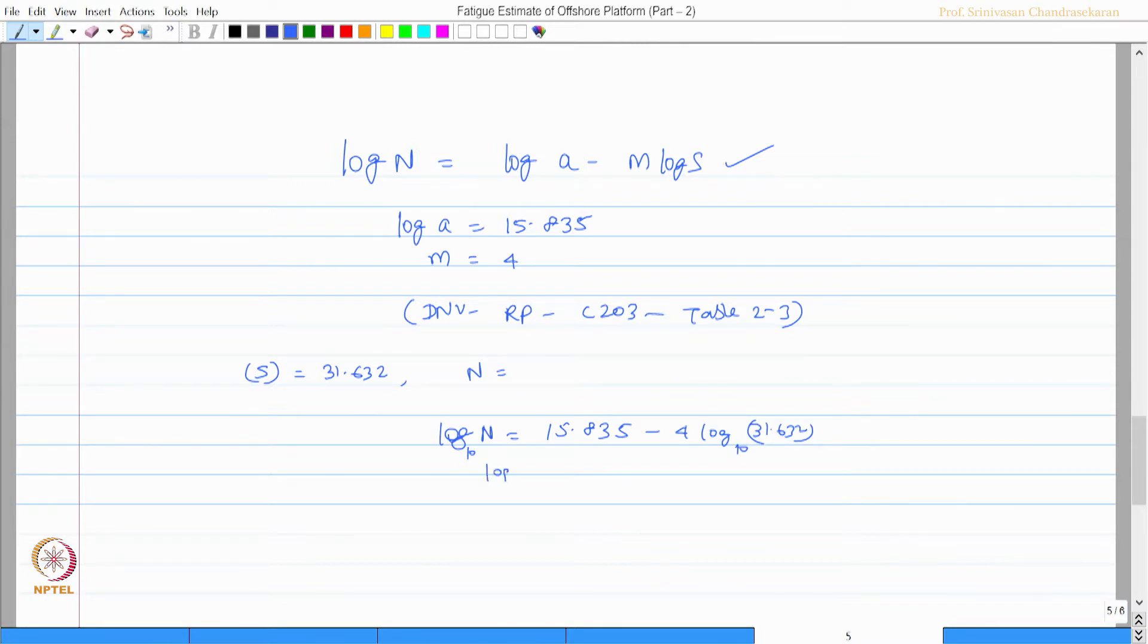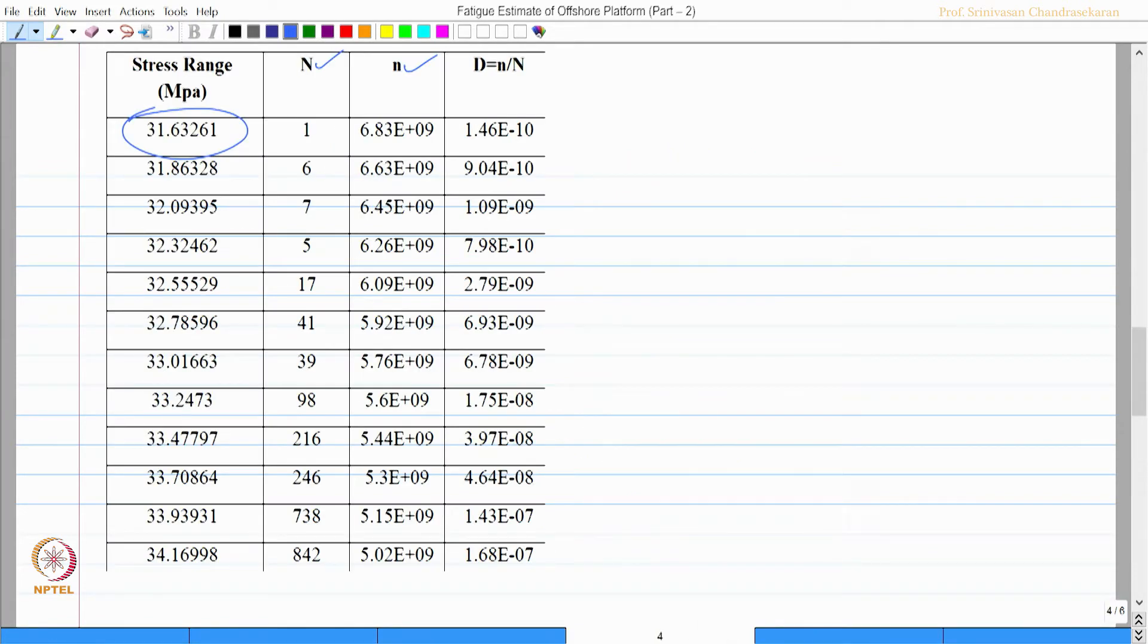Log n is 9.834 therefore, n is 10 power 9.834 which gives me 6.83 times 10 power 9. Small n from this figure is found to be, this is capital N and this is small n is found to be 1.